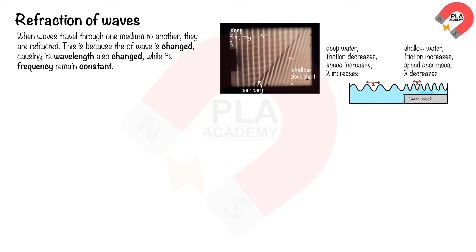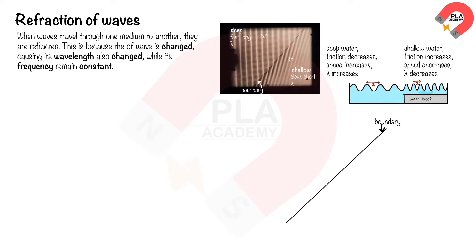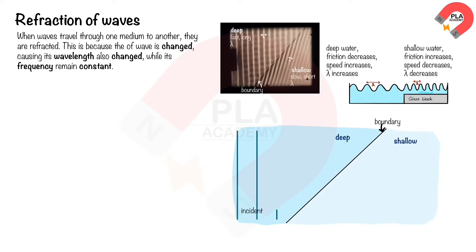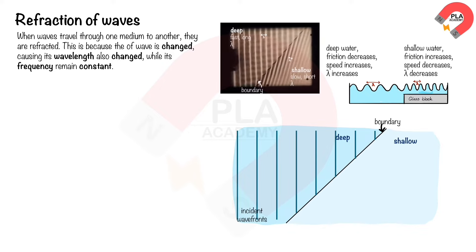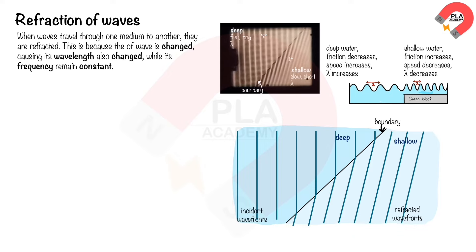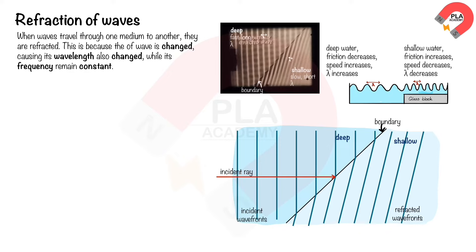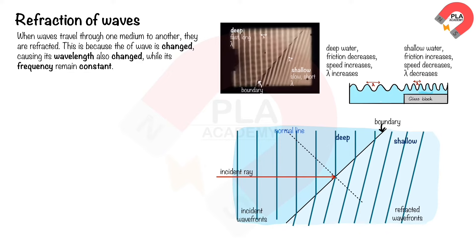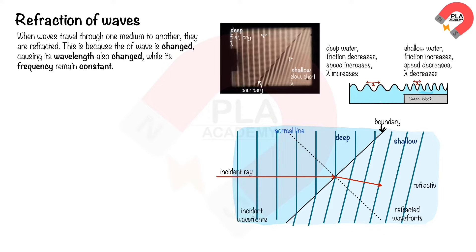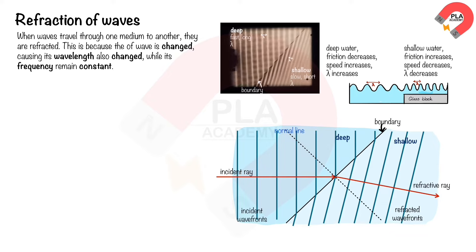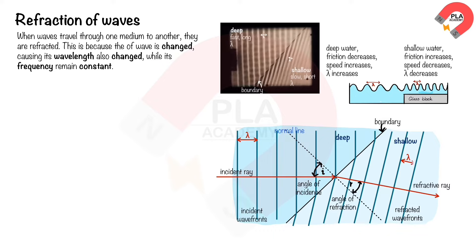Candidates should be able to draw a diagram of wave refraction. Draw the boundary between shallow and deep water, the incident wavefronts in deep water, and the refracted wavefronts in shallow water. Draw the incident ray perpendicular to the incident wavefronts, the normal line perpendicular to the boundary surface, and the refracted ray perpendicular to the refracted wavefronts. The angle of incidence, i, is between the incident ray and the normal line. The angle of refraction, r, is between the refracted ray and the normal line.